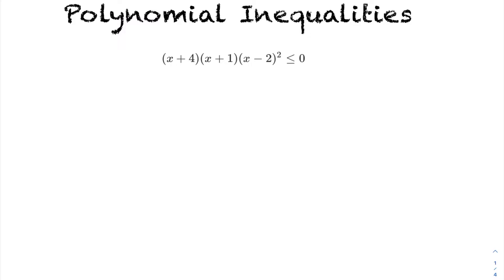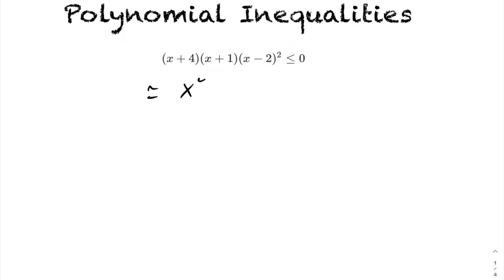To graph the following polynomial, notice that the leading coefficient will be x to a power of 2 from the exponent of 2 here, plus a power of 1 and a power of 1. So 2 plus 1 plus 1 gives us a power of 4, plus there'll be a bunch of other terms. The main point is the leading coefficient is x to the power of 4.